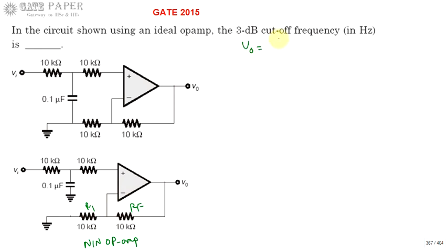V0 can be represented as V0 equals 1 plus RF by R1. This is the gain provided by non-inverting op-amp for the voltage presented at the non-inverting terminal. So V0 is 1 plus RF by R1 times V+, where V+ is voltage across the non-inverting terminal.